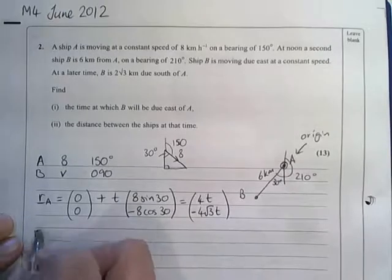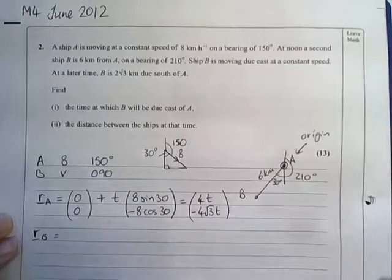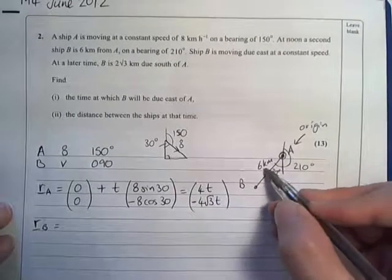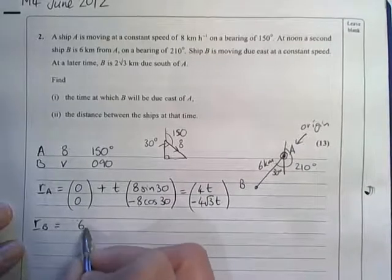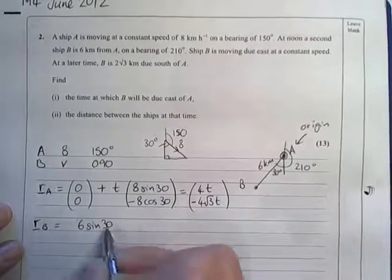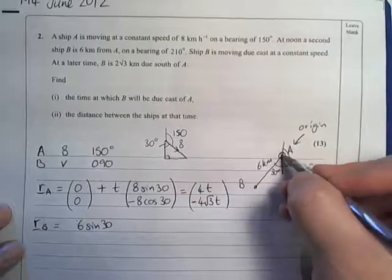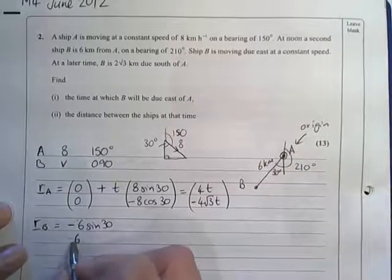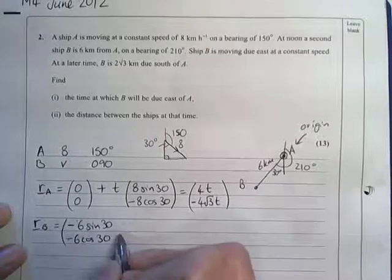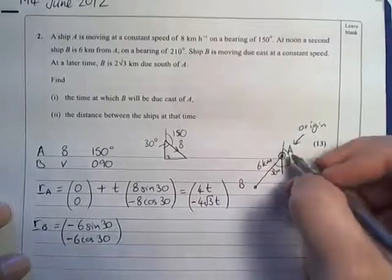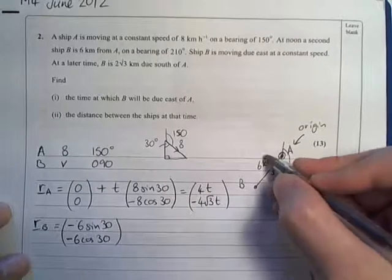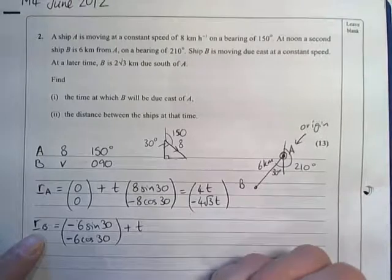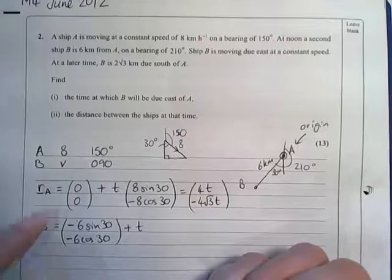Doing something very similar for B, B's position is where it was in the beginning compared to this origin, which will be 6 sine 30, but it will be negative 6 sine 30 in the I direction, and then also 6 cosine 30, negative again, as everything is relative to here and B is to the left and down, plus t times the velocity of B, which we don't know.